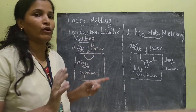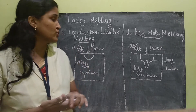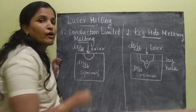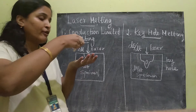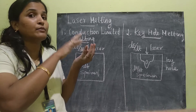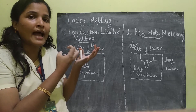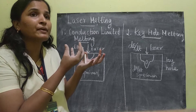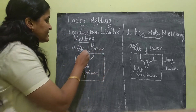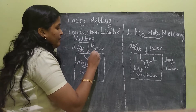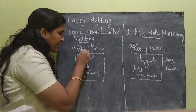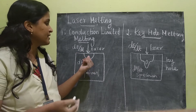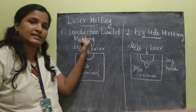So first is conduction limited melting. Here, as I said, low power laser is used. We have a specimen and the laser is allowed to fall on the material. Because of the heating, some amount of energy will be absorbed, and absorption will increase the heat of the material. Because of the temperature increase, the material will become molten. The part of the area surrounding the laser beam, in the form of a hemisphere, will be melted. This is the melting process in the first type.